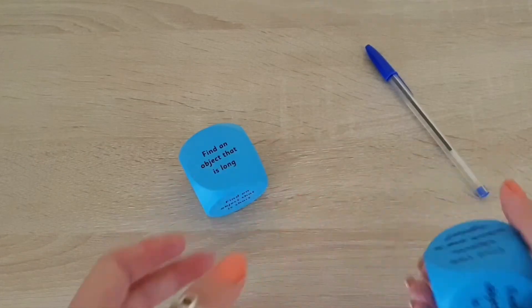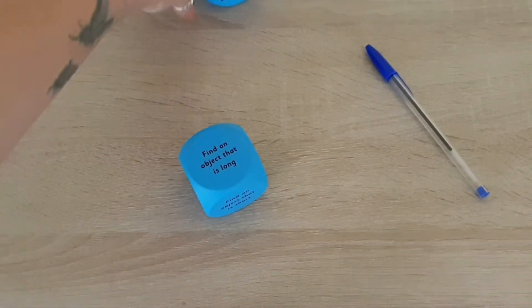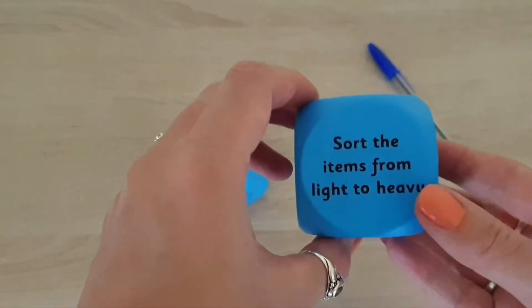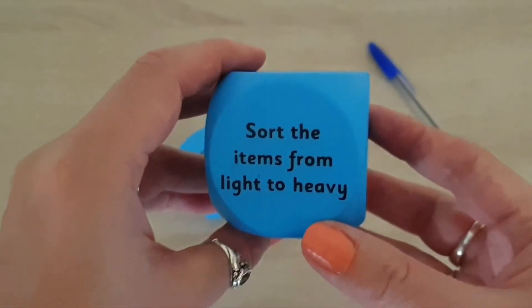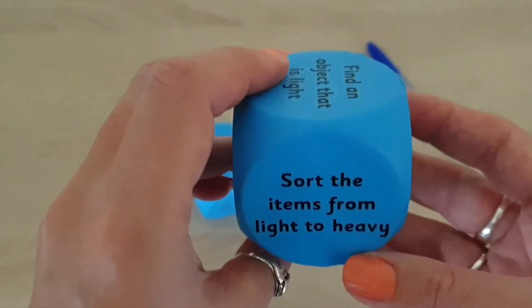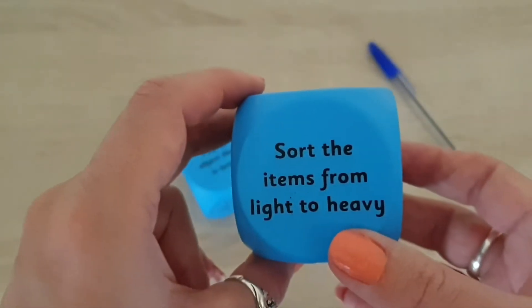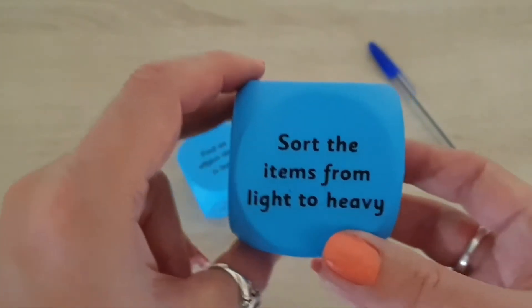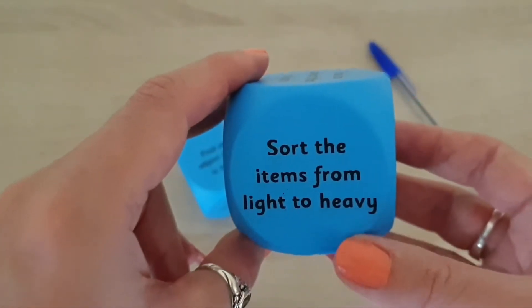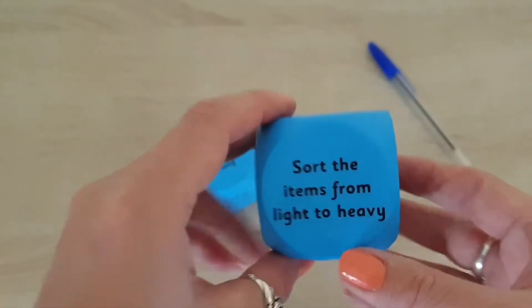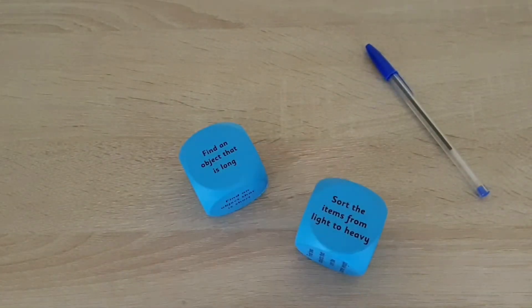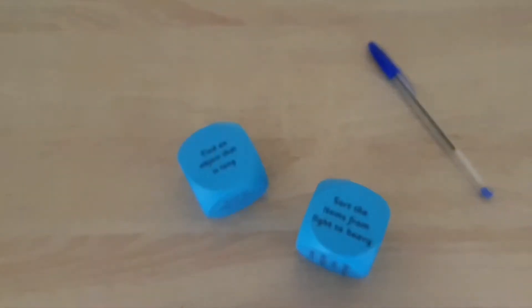Let's have another go at rolling the weight cube. This is actually a really good activity. This one says sort the items from light to heavy. So maybe have a little chat with your child about what light means, what heavy means. Go off and find a selection of objects and then you'd be asking them to sort them in order from light to heavy.